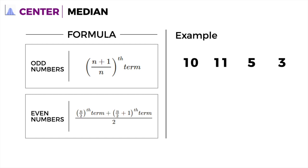What you want to do is sort this out in ascending order. When you sort it out, we get 3, 5, 10, 11.